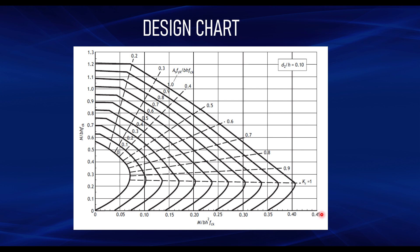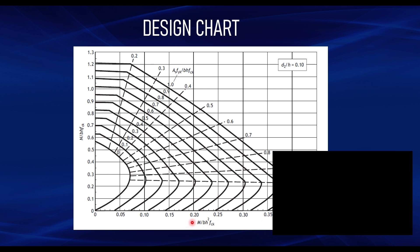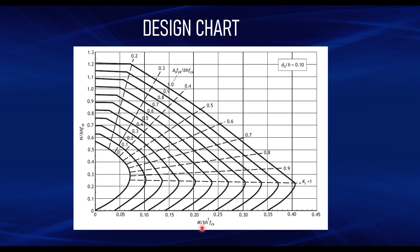Looking at this chart, we have two axes. The vertical axis denotes N over bhfck, where N is the axial load, B and H are the width and depth of the column, and fck is the compressive strength of concrete. Along the horizontal axis you have M over bh²fck, which represents the bending moment — computed after analysis, depending on whether the column is short or slender.